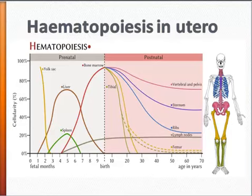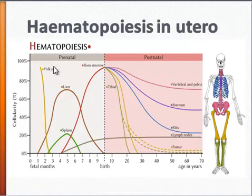So after conception, as the embryo is developing within the uterus, when do Hematopoietic stem cells first appear? They appear at about three weeks gestation. Where do they appear? They appear at the yolk sac, as well as the aortic mesoderm, the gonadal mesoderm and the mesonephros, collectively known as the aortogonadal mesonephros, also known as the AGM.